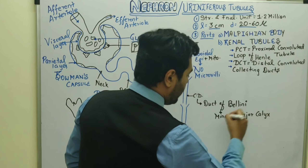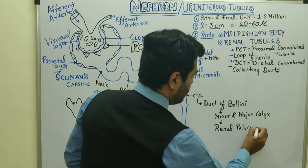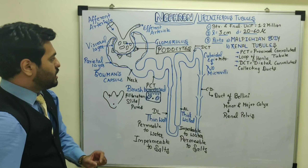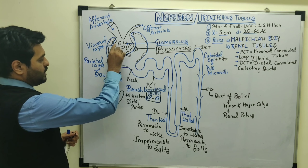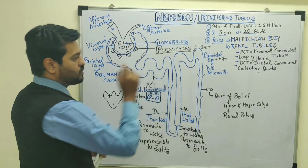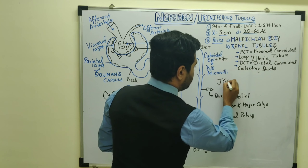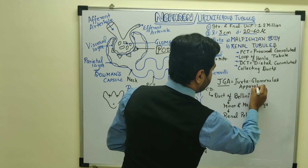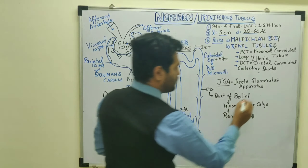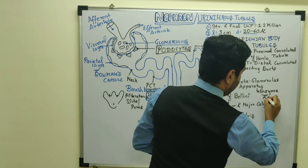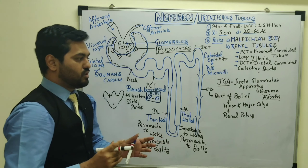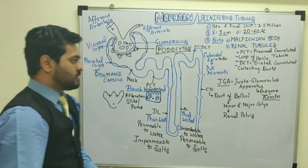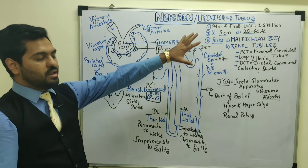The minor and major calyx open into the renal pelvis, which is the funnel-shaped region of the kidney. This completes our discussion of the structure of the nephron — the structural and functional unit of the kidney. One important part to remember: the glomerular cells, afferent arteriole smooth muscle cells, and DCT cells form a structure known as the JGA — the juxtaglomerular apparatus. JG cells within this apparatus secrete an important enzyme called renin, and the full RAS mechanism is discussed in a separate video.